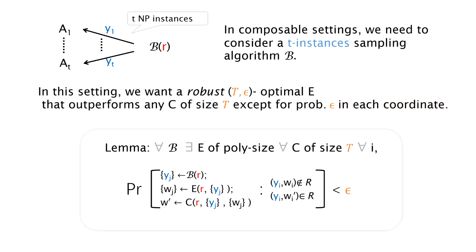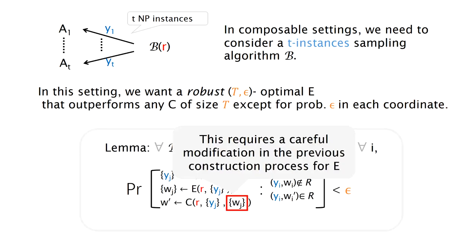And for such T-instance sampling algorithm B, we also have a robust T-epsilon optimal extractor of polynomial size, which is optimal in every coordinate i. Here we assume that we allowed the circuit C to take the output of the extractor as input. For this change, we need to make some careful modifications in the previous procedure for constructing an optimal extractor.